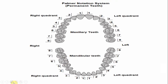In the Palmer notation system, the mandibular first molars are both numbered six. The only difference is the symbol used: one symbol indicates the mandibular left quadrant, and the other symbol indicates the right side. The six indicates the tooth number — the first molar position.